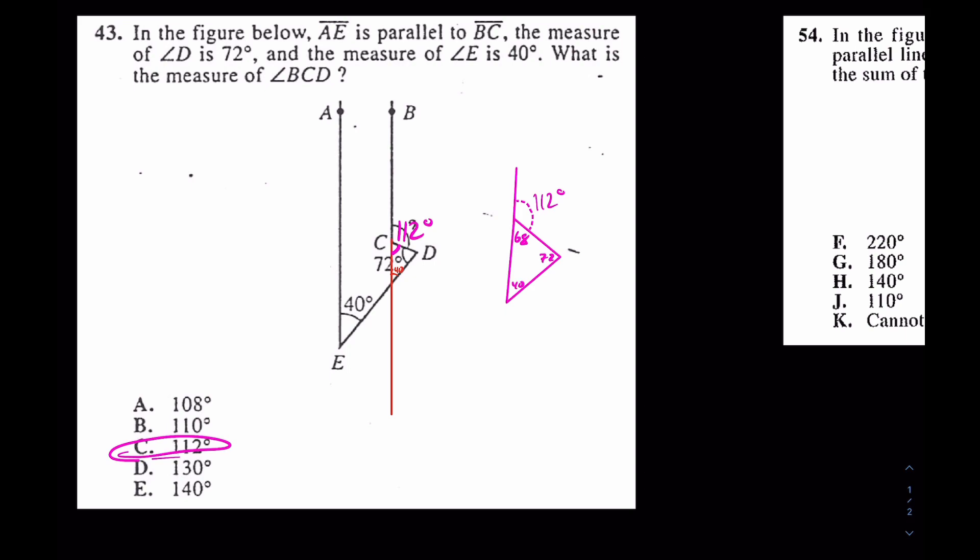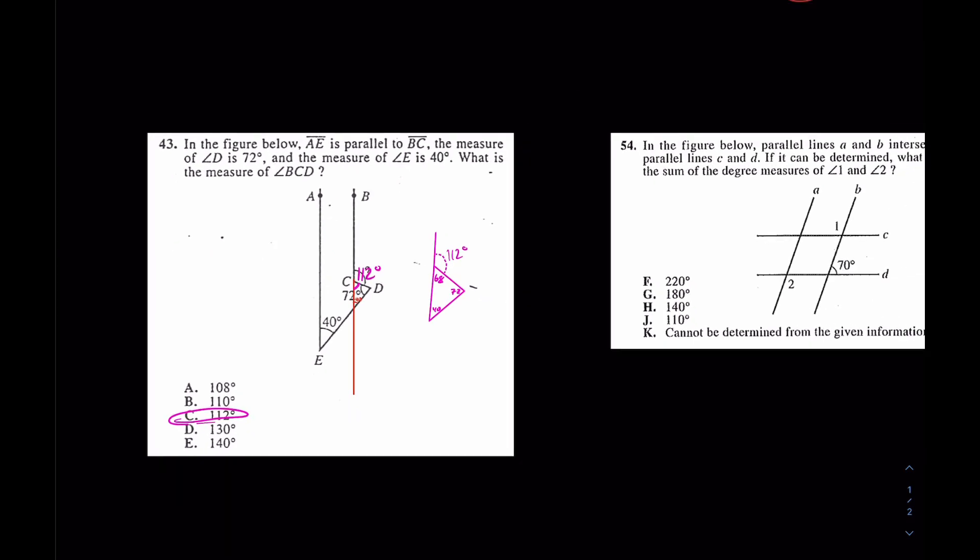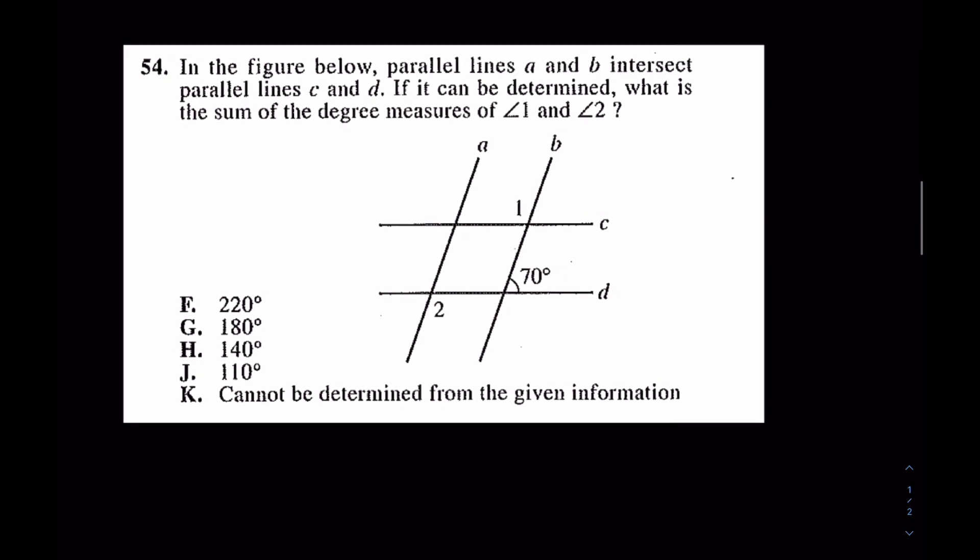Alright, so if you have any questions on that one, comment down below. But if not, let's keep zippin', taking a look at number 54, all the way on this right-hand side. These are real questions. So, it says, what is the sum of measures 1 and 2?